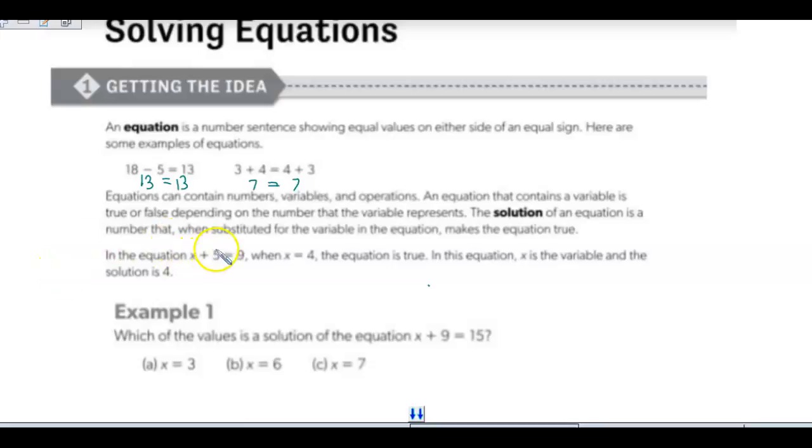In the equation x plus 5 equals 9, they say if x equals 4, the equation is true. We can test that by taking or replacing x with 4. 4 plus 5 is 9. So x is 4, and therefore, x is our variable and the solution to this equation is 4, because we found that x is 4.